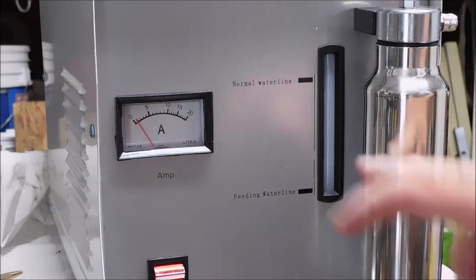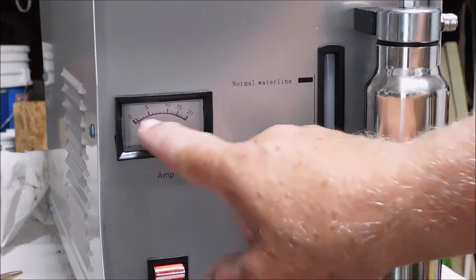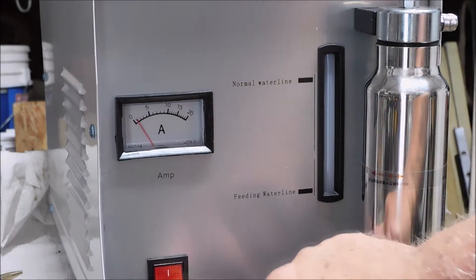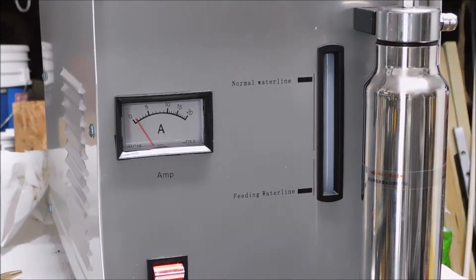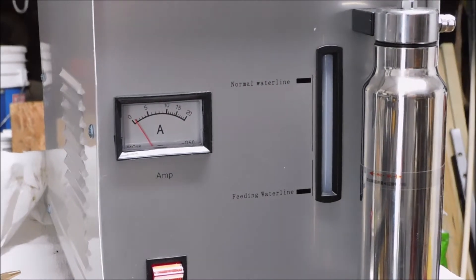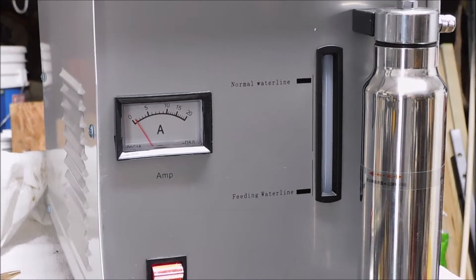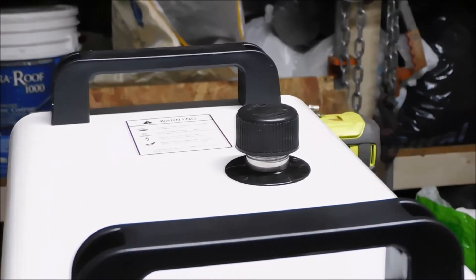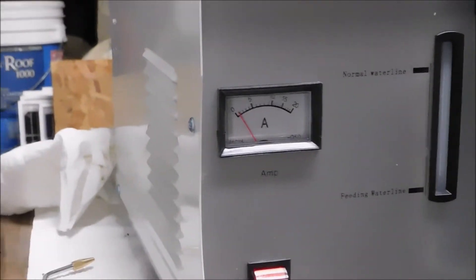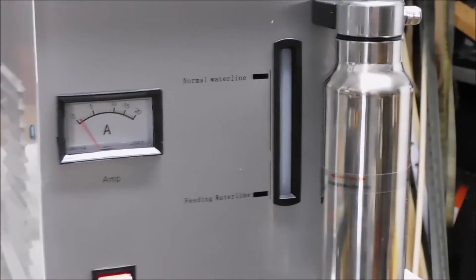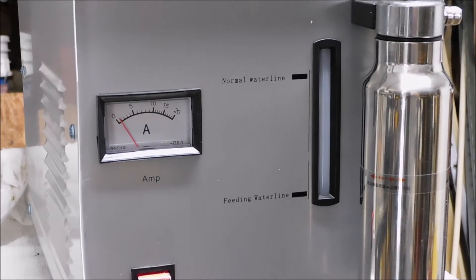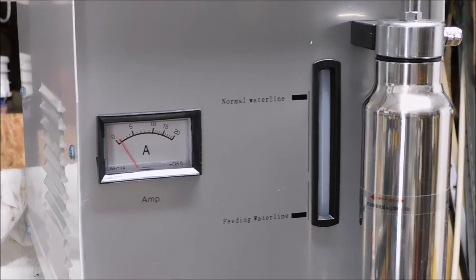There's an indicator for water level inside the tank, an amp gauge for how much you're drawing, and a power switch. There isn't much to it. Little tank on the top, cap on the top for the tank, and the ventilation. But I want to open it up, I want to see what's inside of it.